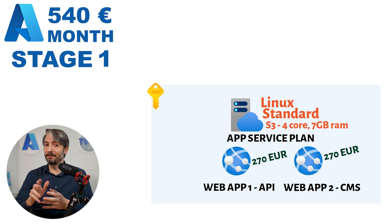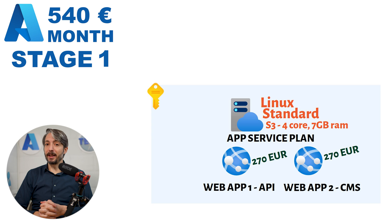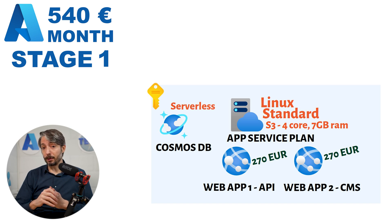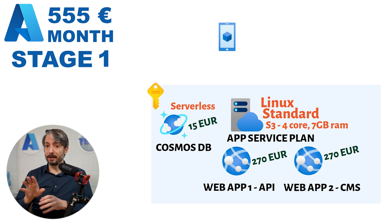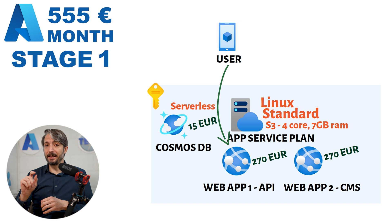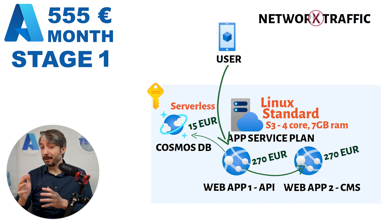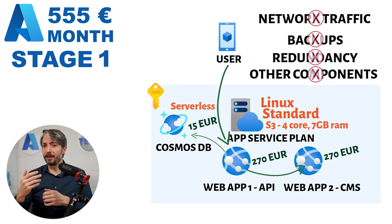Usually there's also a test and staging environment; however, we will not include that in the current scope. We do need a small database, and we opted for Azure Cosmos DB for MongoDB with limited request units. It will be serverless, so it will cost only about 50 euros per month — going for the absolute minimum there. This setup will technically work: the users' mobile devices connect directly to the API instance of the web app, which in turn communicates with the CMS web app and Cosmos DB. Without taking into account any special network traffic, backup redundancy, or other components, we start at roughly 550 euros per month.